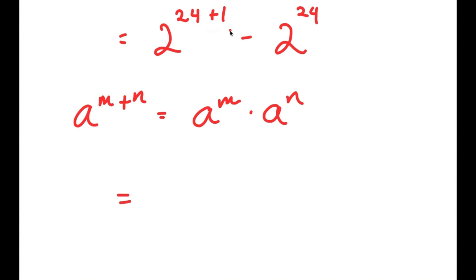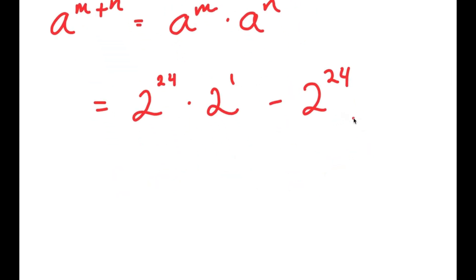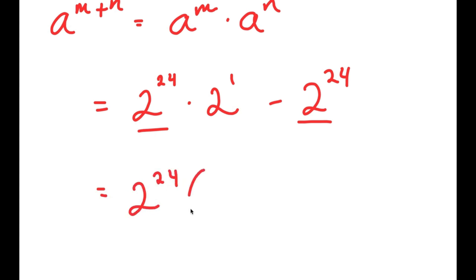So now 2 to the power of 24 plus 1 turns into 2 to the power of 24 times 2 to the power of 1, and I still have this minus 2 to the power of 24. From here, what I'm going to do is factor out 2 to the power of 24, because notice how both of these terms have 2 to the power of 24 in them. So I get 2 to the power of 24 times — 2 to the power of 24 divided by 2 to the power of 24 is just 2 to the power of 1, and negative 2 to the power of 24 divided by 2 to the power of 24 is just negative 1.